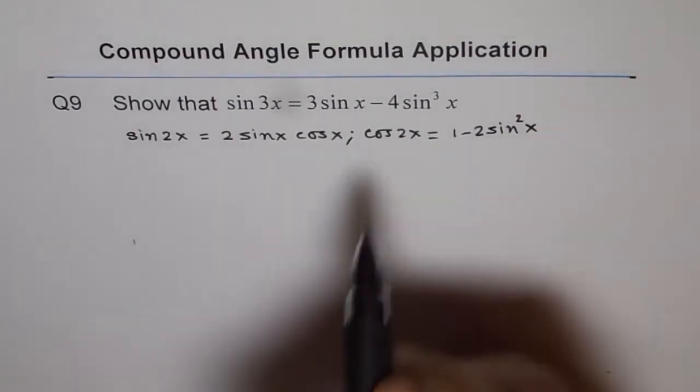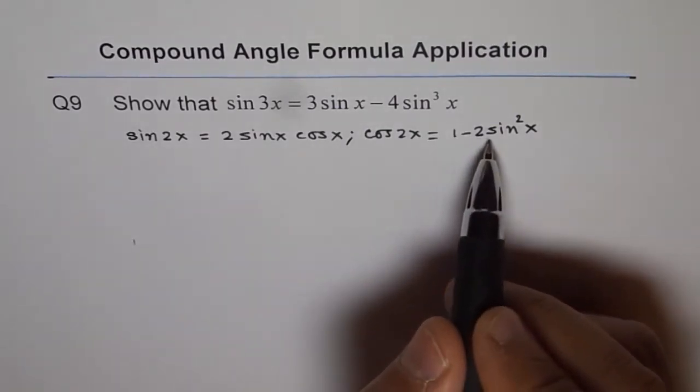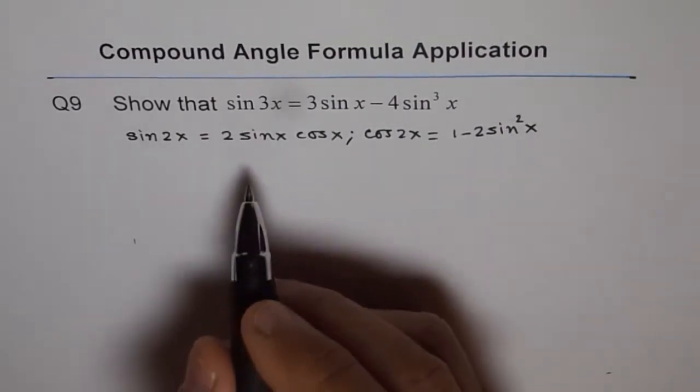Now, since we want everything in sine, we'll prefer to write cos 2x as 1 minus 2 sine square x, correct? Now, let's begin.